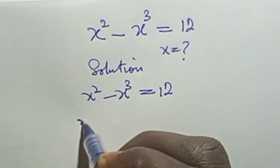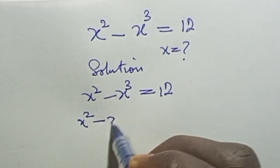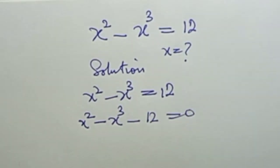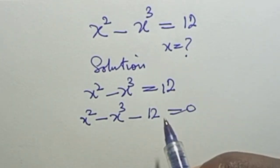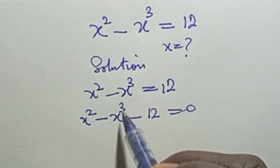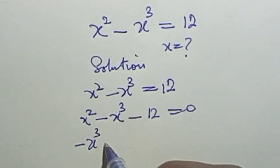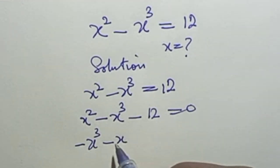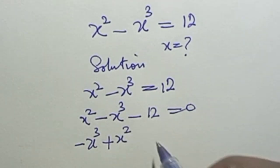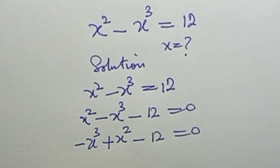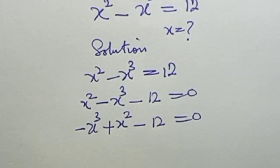I will rewrite this as s squared minus s cubed minus 12 equals zero, writing it with the highest power first: minus s cubed plus s squared minus 12 equals zero.